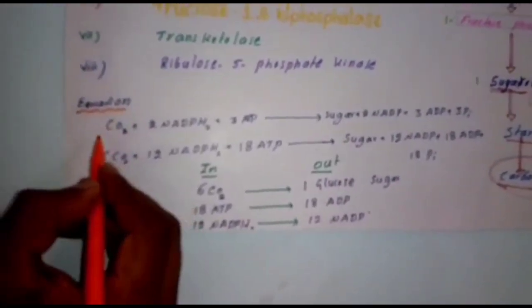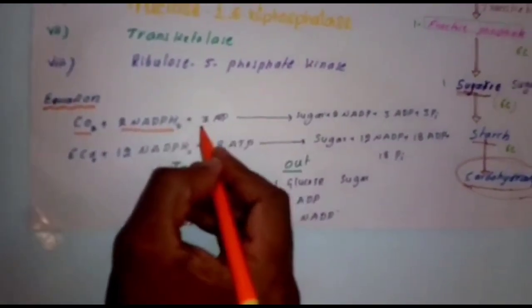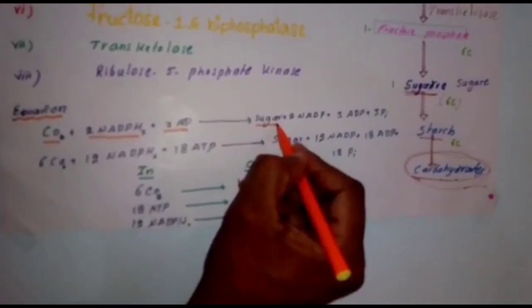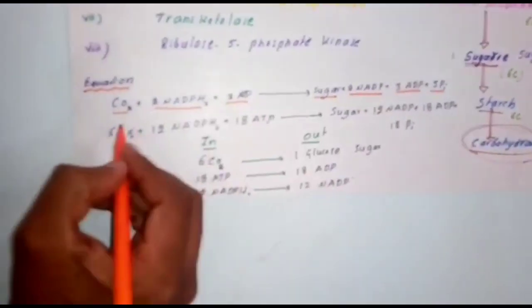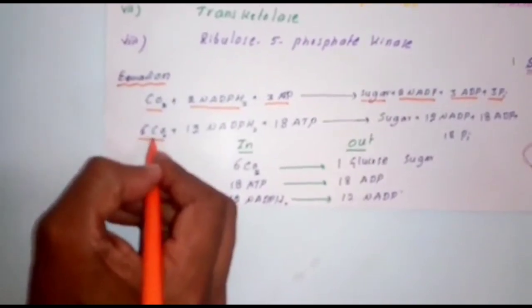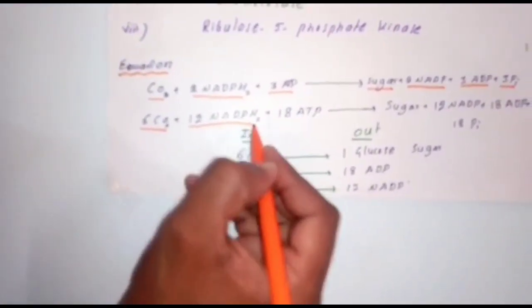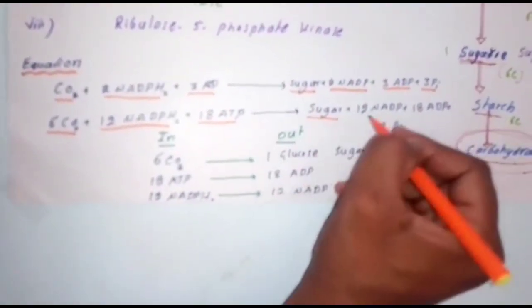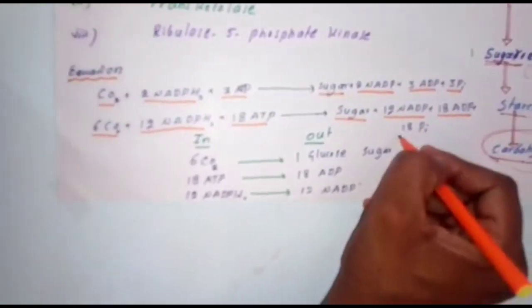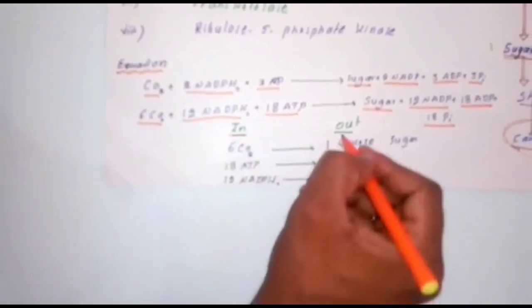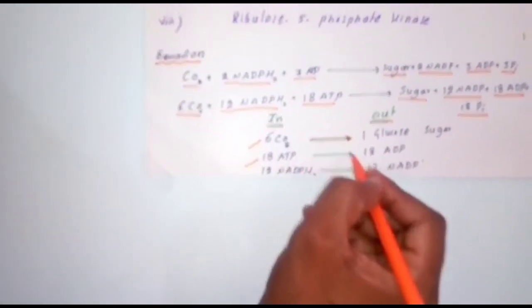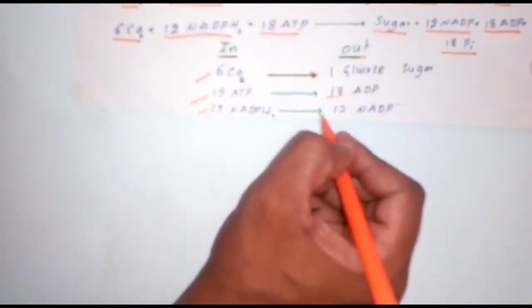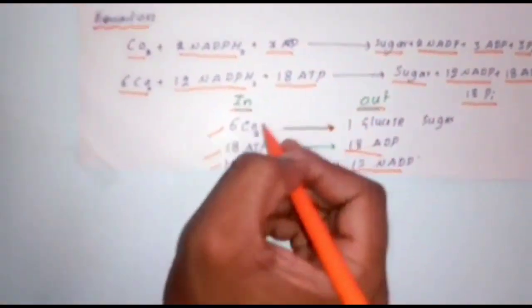Let us see the equation of dark reaction. For 1 carbon dioxide: using 2 NADPH2 and 3 ATP, one sugar molecule is produced along with inorganic phosphates. When 6 carbon dioxide participate in the full equation: 12 NADPH2 are used, 18 ATP are used, one sugar molecule is produced, along with 12 NADP and 18 ADP plus 18 inorganic phosphates. So 6 CO2 comes in, 1 glucose is produced; 18 ATP and 12 NADPH2 go in, 18 ADP and 12 NADP come out.